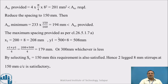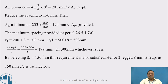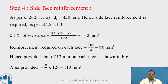The maximum spacing as per clause 26.5.1.7 is checked using X1 = B1 + diameter = 200 + 8 = 208 mm and Y1 = D1 + diameter = 500 + 8 = 508 mm. (X1 + Y1) / 4 works out to be 179 mm or 300 mm, whichever is less. By selecting SV = 150 mm, this requirement is also satisfied. Hence, four-legged 8 mm stirrups at 150 mm center to center is satisfactory for taking torsion.